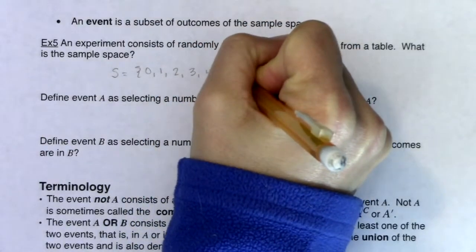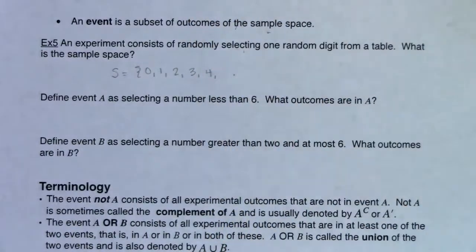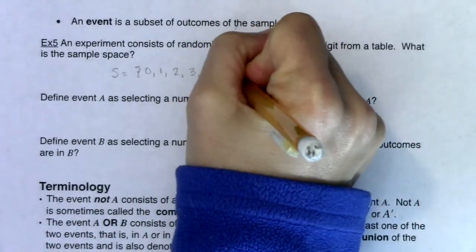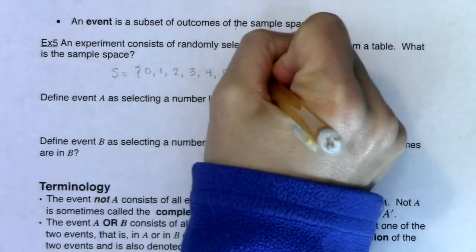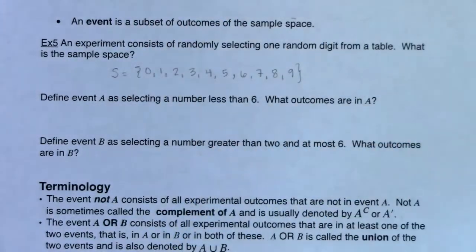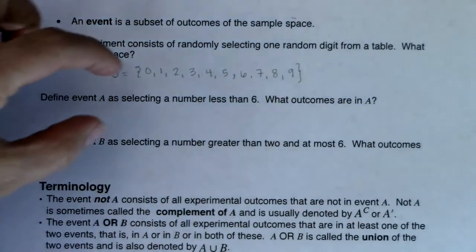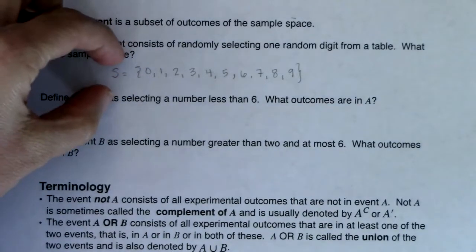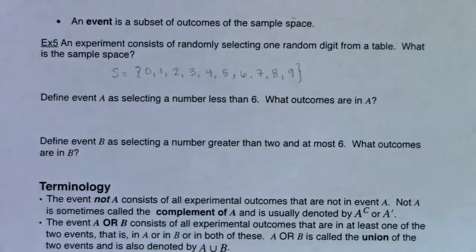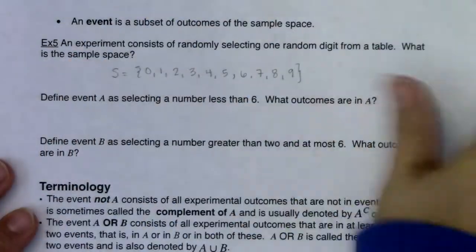Those are our 10 single-digit numbers. If I was picking two digits at a time, I'd have a much larger sample space — actually 100 outcomes: 00, 01, 02, all the way up to 99. But we're taking one digit at a time, so there are only 10 options.